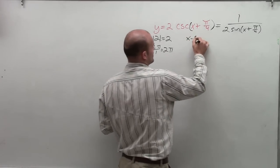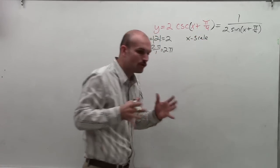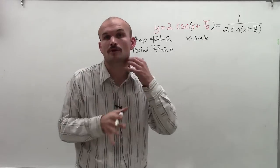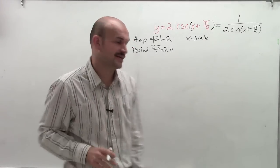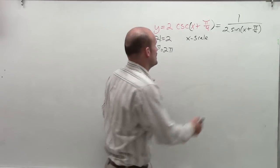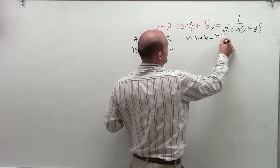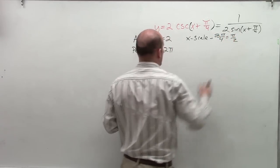Then let's go ahead and find the x scale, which is the same thing as our critical points. We actually don't want to find the critical points. I want to find the distance between each one of my critical points. So to do that, I'm going to take my period and divide that by 4, which is pi halves.